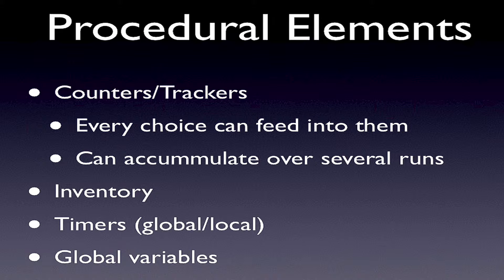Talking more about these procedural elements: first, there are tracking and counting systems. You can use these for something like a character having the trait of timid, aggressive, or flirtatious. Every choice that a user makes feeds into the system and accumulates these different counters. You can then procedurally branch at a point in time depending on the state of these counters — say, we've created a timid character, so let's go into this trajectory. Every choice can feed into them.